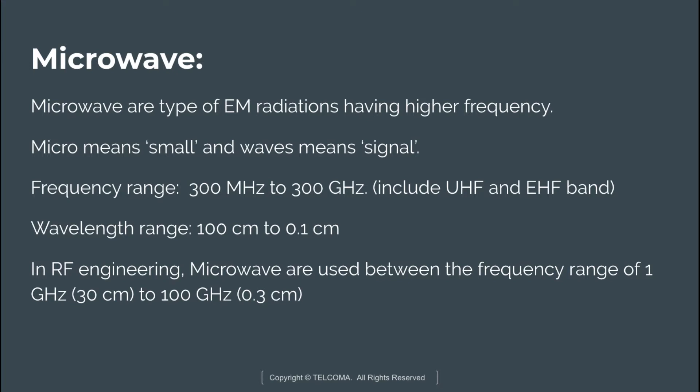Microwaves are associated with features that make them efficient for transmission purposes. First, they travel in a straight line, meaning they are not affected by the troposphere — the upper layer of the Earth's atmosphere — and they are not reflected by the ionized region of the atmosphere. They also do not fade due to barriers in the surroundings like mountains or large buildings.